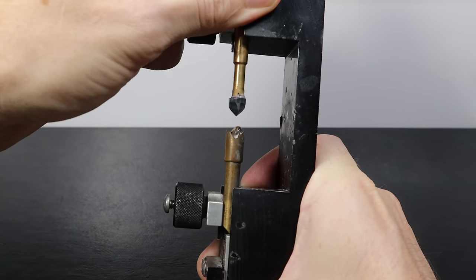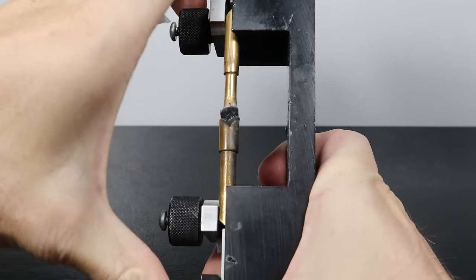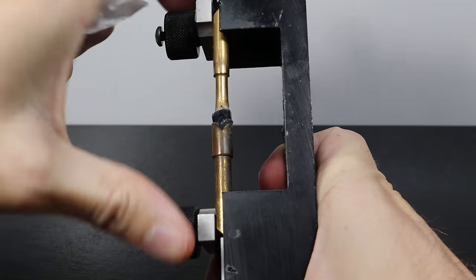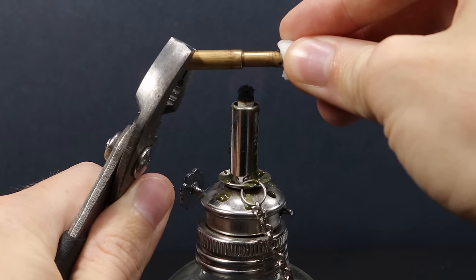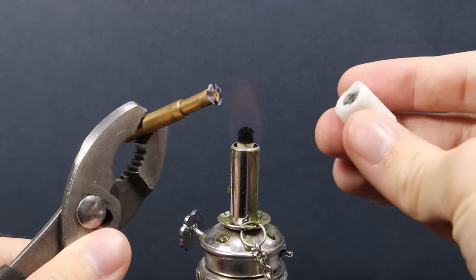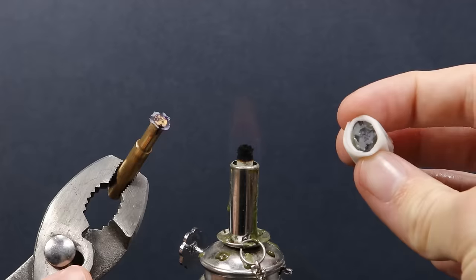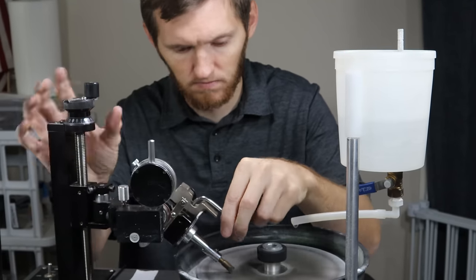I use a transfer jig to attach a bead dop to the pavilion of the stone so that I can switch over to cutting the crown. When the glue is set I use the heat of a flame on the flat dop to weaken the bond of the glue so that it can be removed. I start back at a 600 grit for cutting in the crown.